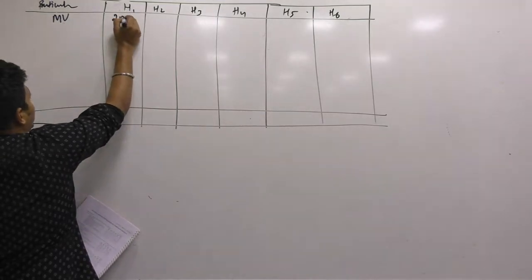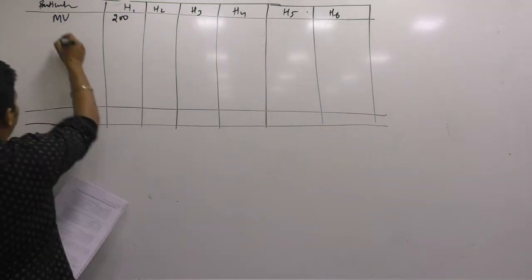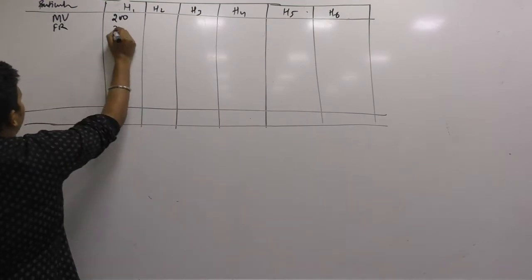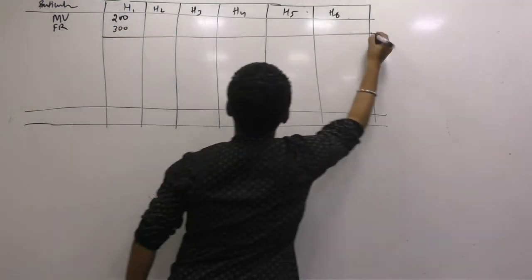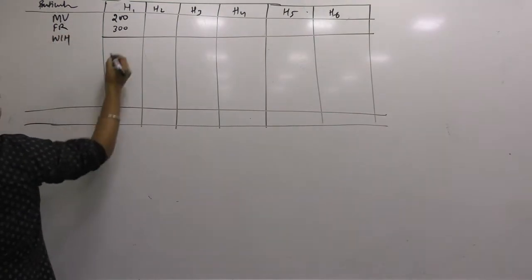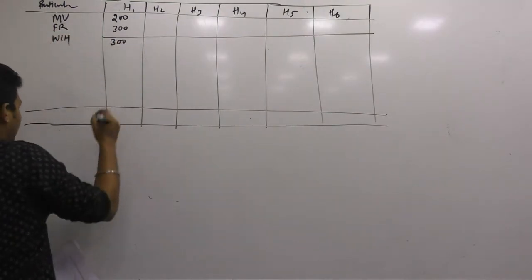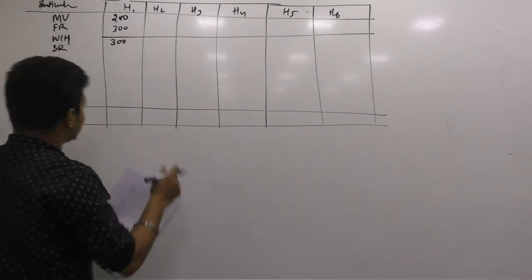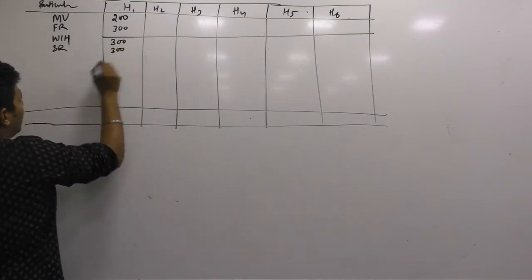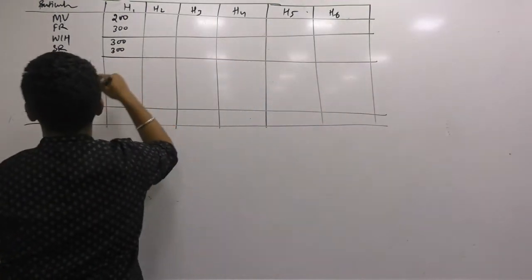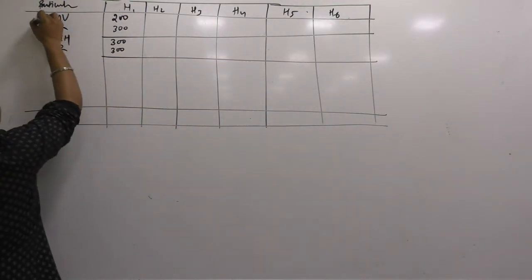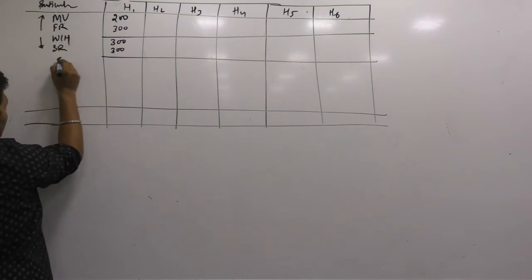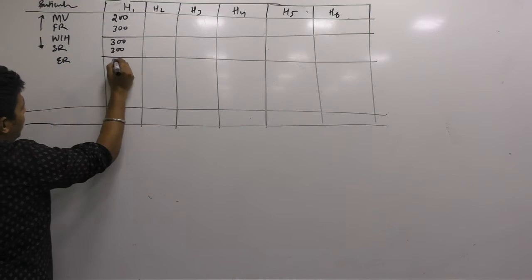Municipal value of this property they have given 200. Second is fair rent — fair rent of this property they have given 300. Out of 300 and 300, whichever is higher — that amount is 300. We compare this with standard rent. Standard rent as per question is 300. So out of these two we take whichever is first high, then low. That amount comes as expected rent, that is 300.